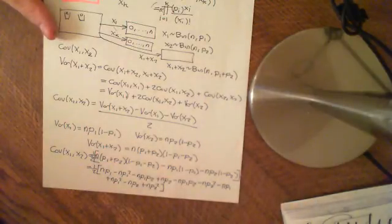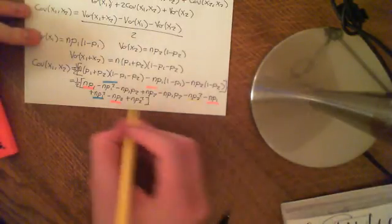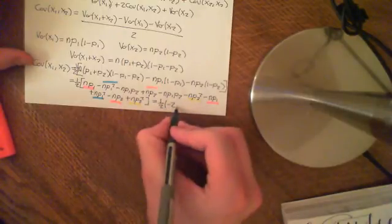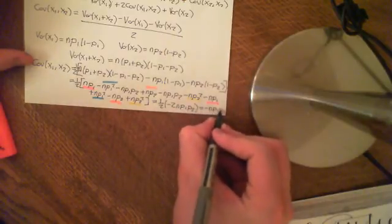Putting all of that together, a lot of things cancel. The np1² cancels, the −np1 cancels with +np1, the +np2 cancels with −np2, and the −np2² cancels with +np2². You're left with just one half times −2np1p2, which gives the covariance equal to −np1p2.